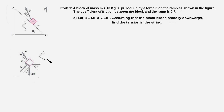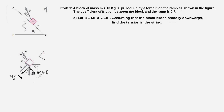Having drawn the FBD and set up the coordinates, let us write the equations of equilibrium. We draw the components of the weight: one component parallel to the plane in the x-direction is mg sin θ, and another component normal to the plane is mg cos θ. Similarly, the force F has two components: one along the plane is F cos α, and another normal to the plane is F sin α.